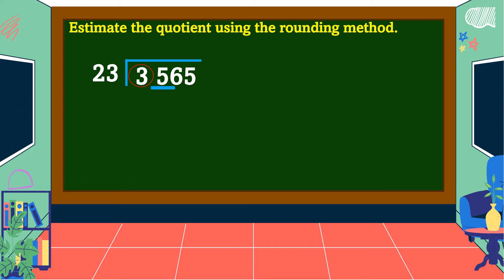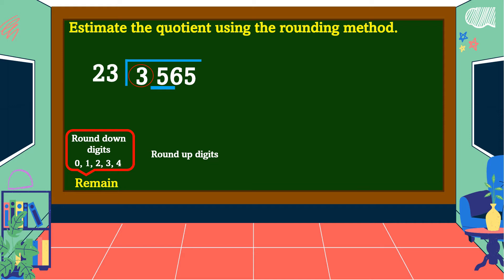If the digit to its right is one of the round down digits — 0, 1, 2, 3, or 4 — then the rounding digit remains the same. But if the digit to its right is one of the round up digits — 5, 6, 7, 8, or 9 — then the rounding digit is added by 1. Since 5 is a round up digit, we add 1 to 3, making it 4, and all digits to the right become 0s.